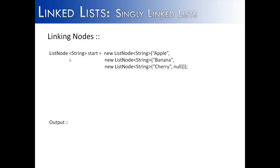Now let's look at a list that has three values. We're going to create three values: apple, banana, and cherry. This syntax might look odd, but the second parameter for each list node is simply the next list node — banana points to cherry next, and the last one is of course null.